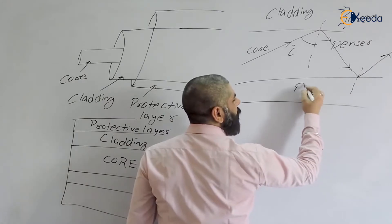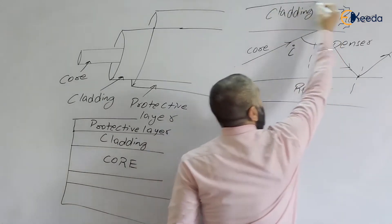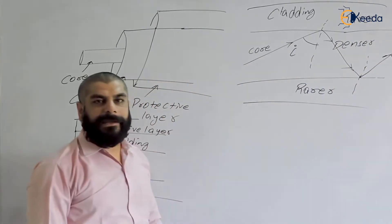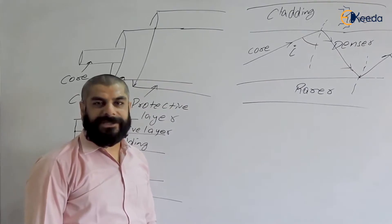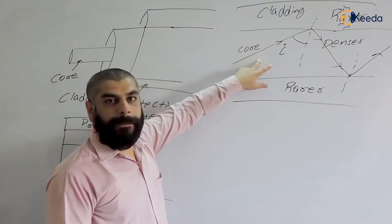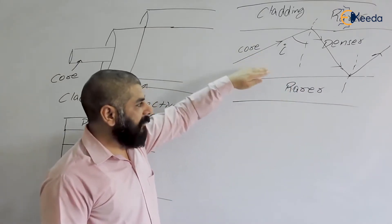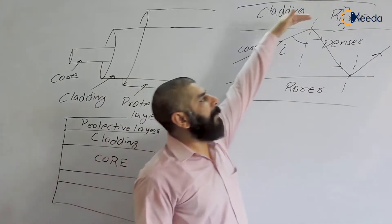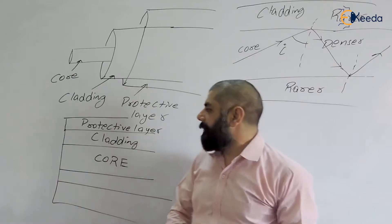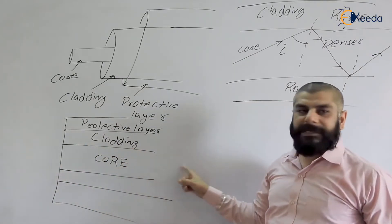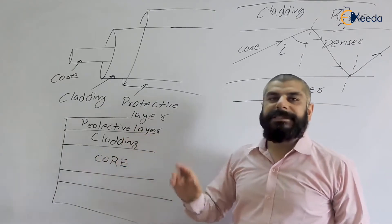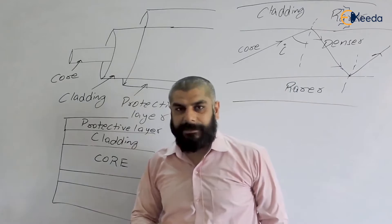This is because the core is the denser medium and outside it is the rarer medium — the cladding. When light moves from a denser to a rarer medium and the angle of incidence is greater than the critical angle, total internal reflection takes place. So light propagates through optical fiber on the principle of total internal reflection. No light passes into the cladding; light propagates only through the core.